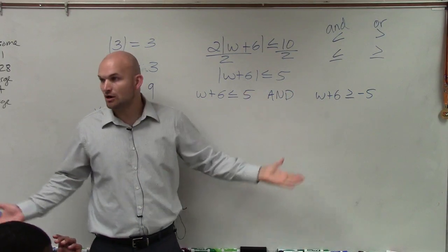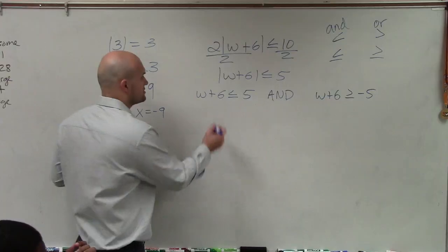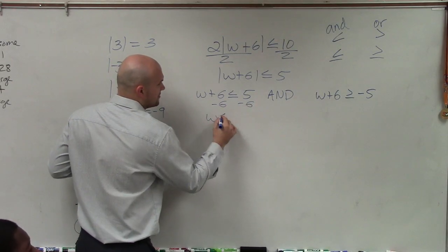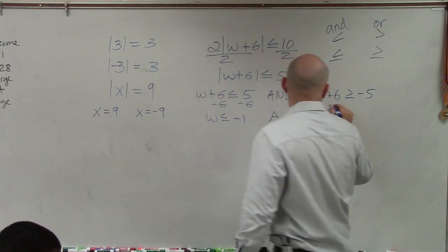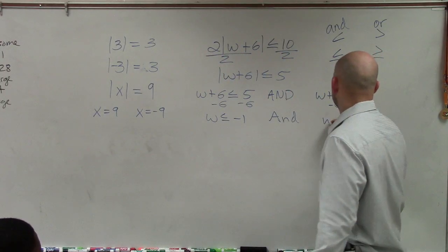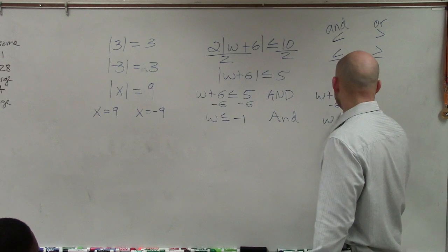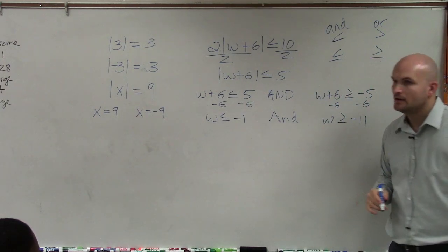Now, we have to solve just like you would solve an inequality. Subtract 6 on both sides. Because w is less than or equal to negative 1 and, subtract 6, subtract 6, w is greater or equal to negative 11.